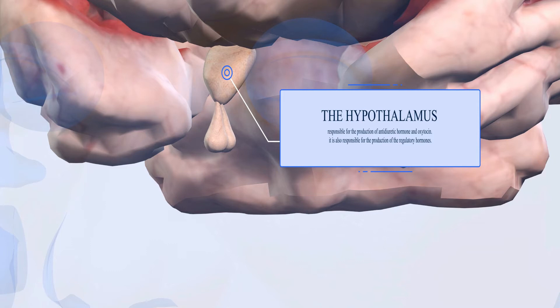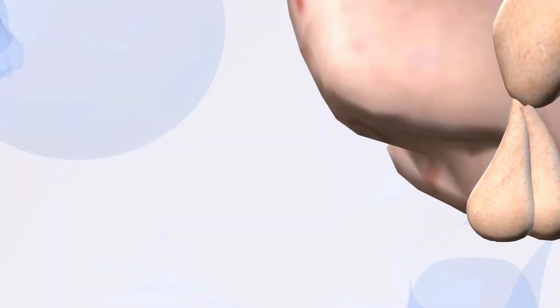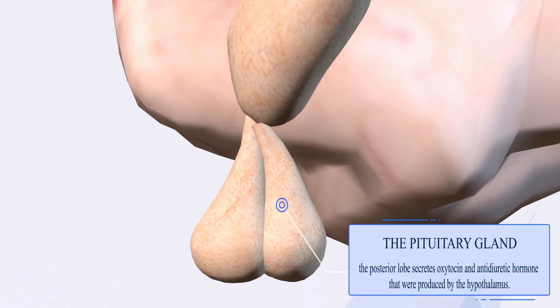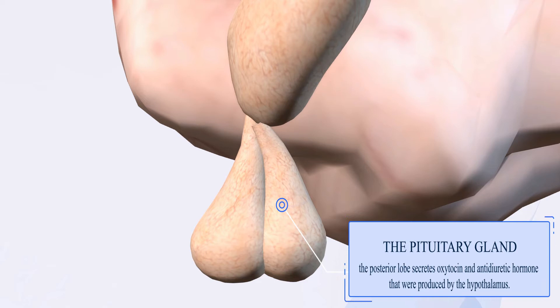It is also responsible for the production of the regulatory hormones. Probably the most important endocrine glands are the pituitary glands which are located right below the hypothalamus here. There are two lobes of the pituitary glands: the anterior lobe and the posterior lobe. The posterior lobe secretes oxytocin and antidiuretic hormone that were produced by the hypothalamus. So the hypothalamus produces these hormones and sends them to the posterior lobe, which then the posterior lobe will secrete into the blood.